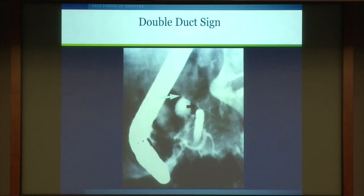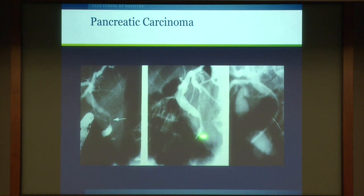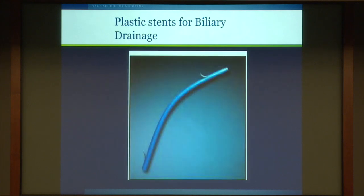This is a patient with pancreatic cancer showing the very pathognomonic double duct sign. Imagine the head of the pancreas obstructing both the bile duct and the pancreatic duct — both ducts obstructed. This is a hallmark of pancreatic cancer, occasionally also seen in chronic pancreatitis. Here's a patient with a stricture in the intrapancreatic portion of the common bile duct, and a plastic stent has been placed across the stricture — a very effective method of drainage.